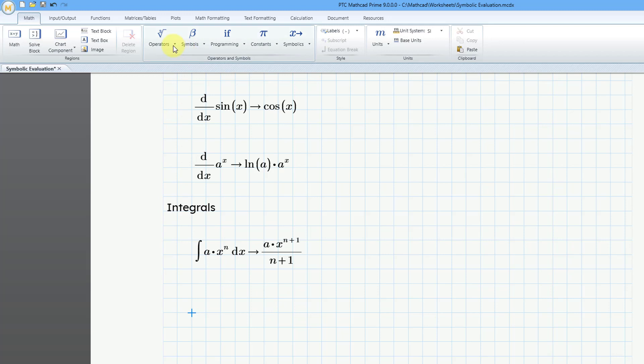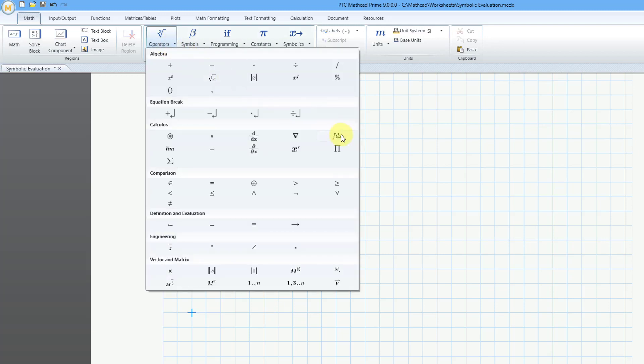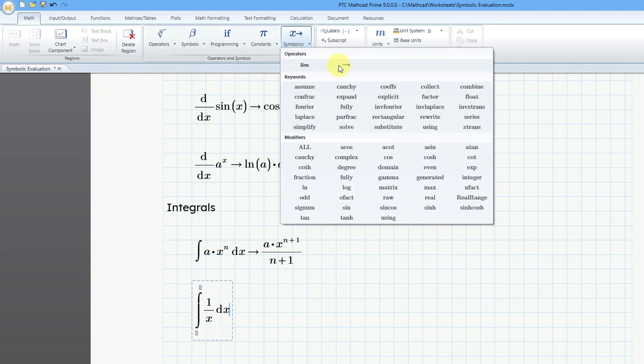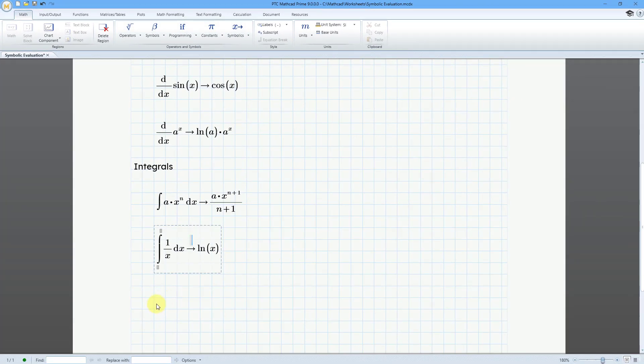Let's do another one. Let's go to Operators, and here is the Integral once more. This one is Ctrl Shift I. And let's do the Integral without any limits. Let's do the Integral of moving over to the placeholder, 1 divided by x, and then moving over, and then type in x. Let's go to Symbolics Evaluation. That's equal to the log of x.